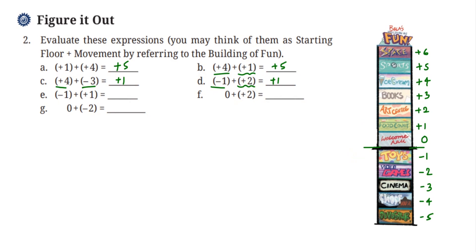Next, we have minus one plus one. Minus one is your starting point, which is toys, and then we go one floor up. We reach the ground floor, which is zero — the welcome hall. So we get zero.